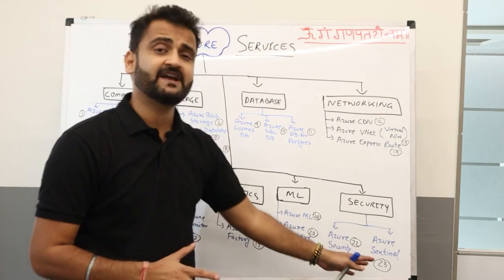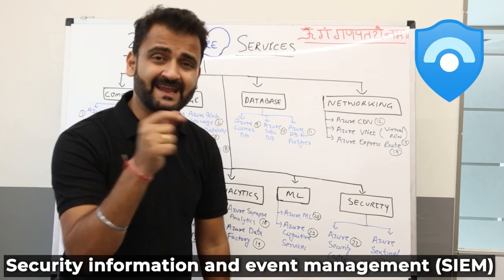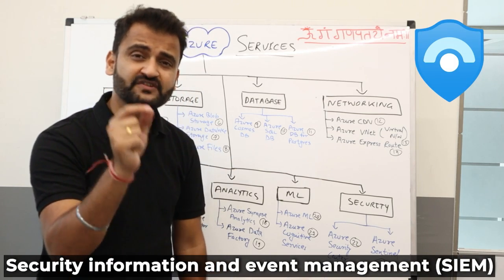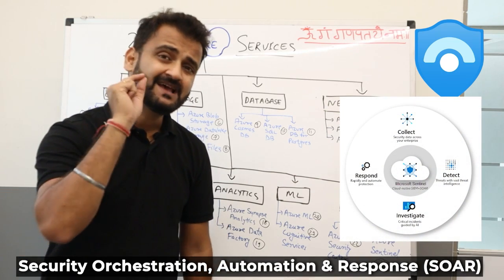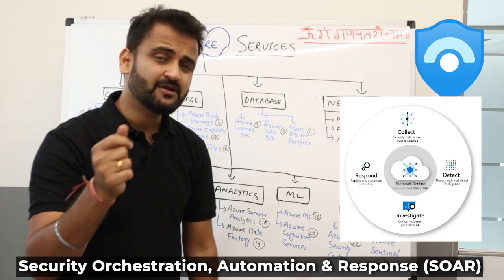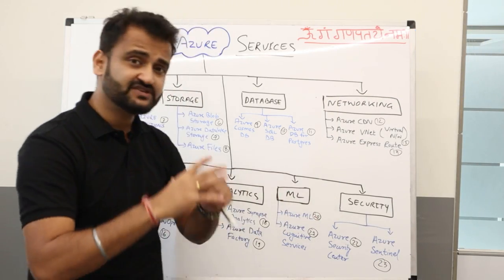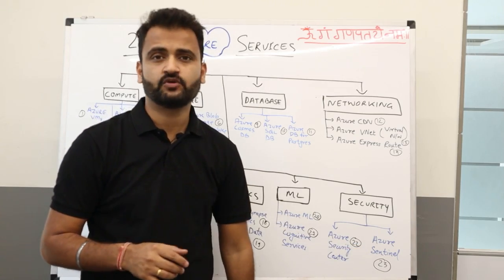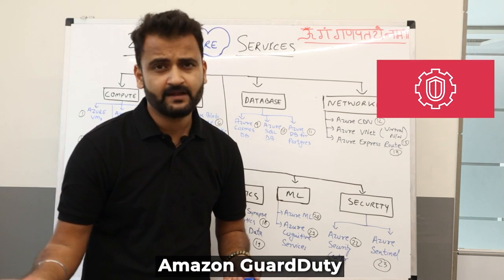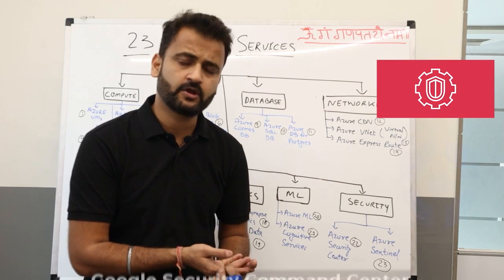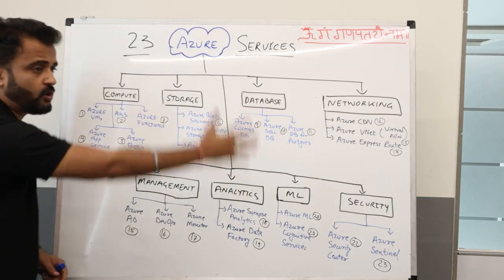The 23rd and last service is Azure Sentinel — a cloud-native service providing SIEM (Security Information and Event Management) and SOAR (Security Orchestration, Automation and Response). On AWS we have GuardDuty and AWS Security Hub, and on Google it is handled using Security Command Center.